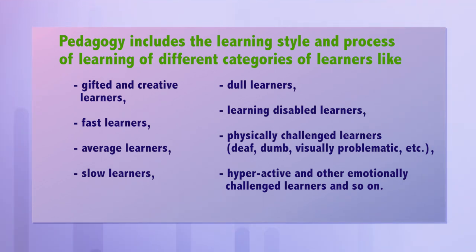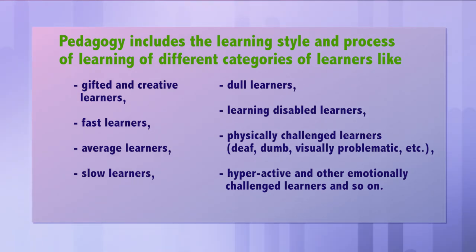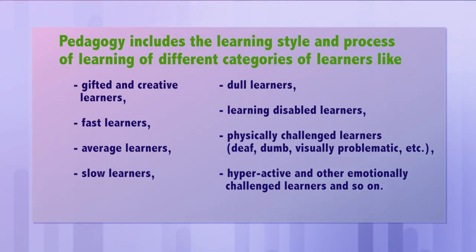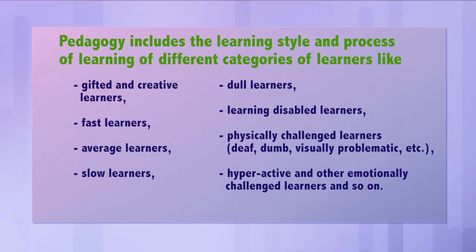In the classroom system, different categories of learners are found like gifted and creative learners, fast learners, average learners, slow learners, dull learners, learning-disabled learners, physically challenged learners which includes deaf, dumb, visually problematic learners, etc., including hyperactive and other emotionally challenged learners. The learning style and process of all these categories of learners are not the same. So the pedagogical strategies for all these categories differ from each other.